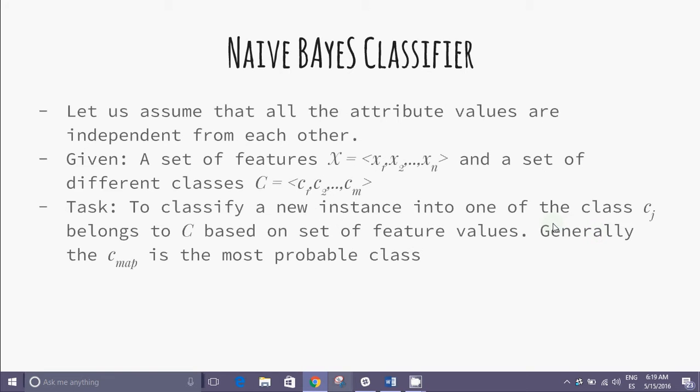Let us now start with Naive Bayes classifier in which we assume that all the attributes are independent from each other. Let us consider a set of features X = {x1, x2, ..., xn} and a set of classes C = {c1, c2, ..., cm}. Our task here is to classify a new instance into one of the classes cj belonging to C based on a set of features. Here, c_MAP is the most probable class.